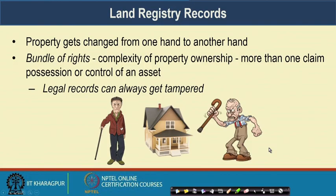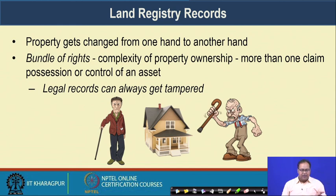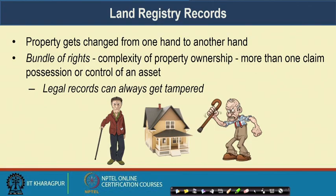These properties get transferred from one hand to another — you can sell your house, or today you are giving your house on rent to one person, tomorrow you can give it to another person. That way these rights change over time and the government maintains the entire land registry records to log these rights and validate that no unauthorized claims are being made on a particular asset. This is called the bundle of rights — the complexities associated with ownership. It may happen that more than one person is claiming control of an asset. Based on certain legal records you can find out which person among those claiming the ownership actually owns the house.